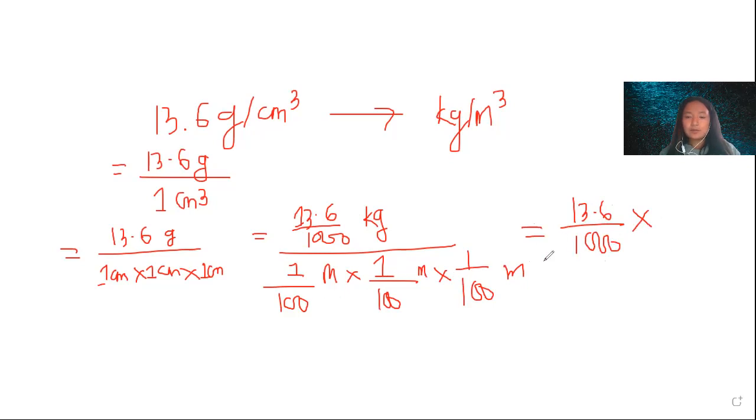All of these numbers come at the top, as such, divided by 1. So, doing calculation, we get the value 13,600. 13,600 kilogram per meter cube.